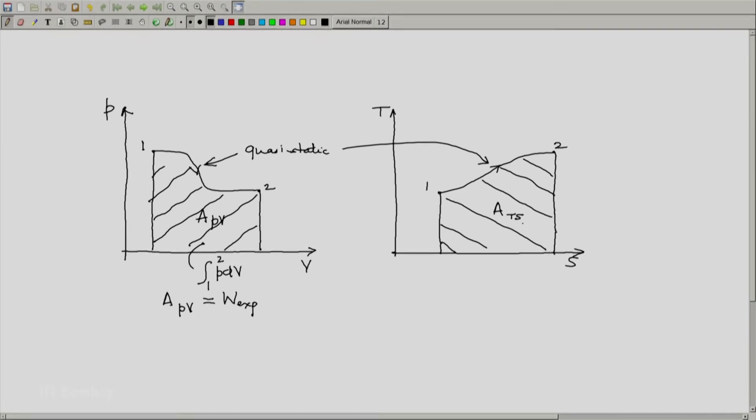What about the area ATS? This area equals integral T dS from state 1 to state 2.